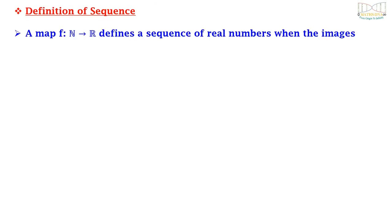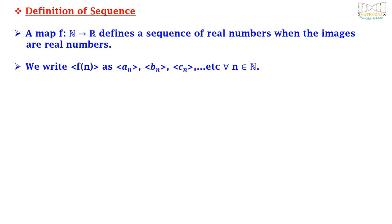Let us begin. What do we mean by a sequence? A map f from N to R defines a sequence of real numbers when the images are real numbers. We write f(n) as a_n, b_n, c_n, and so on, for all n belonging to N.